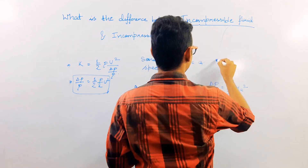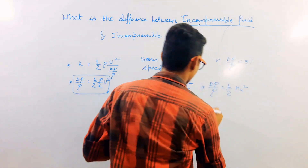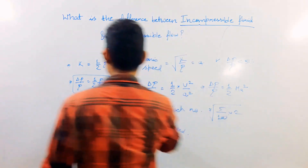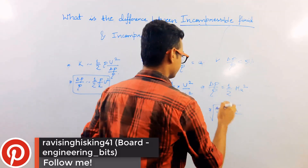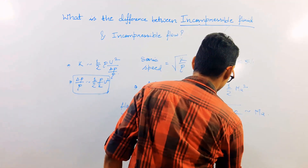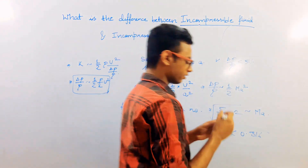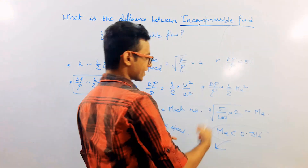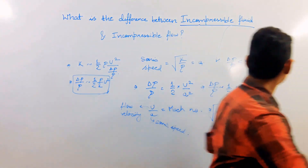A fluid is said to be incompressible when Δρ/ρ must be less than 5%. Substituting into Δρ/ρ = ½Ma²: putting 5% and solving — taking the square root of (0.05 × 2) — this comes out to be approximately 0.316. So a fluid is incompressible when the Mach number is less than 0.316, or equivalently when Δρ/ρ is less than 5%. This is how these two criteria are interrelated.